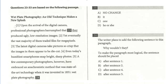You see these brackets — there will be a question about sentence order. For question 23, upon the arrival of the digital camera, professional photographers harumphed that they produced ugly low-resolution images. The issue is the pronoun 'they.' What produced the ugly low-resolution images? It's certainly not the photographers — it's the digital camera, which is singular, so the pronoun should be 'it.' There's often space between the subject and the pronoun, so make sure you match them up.